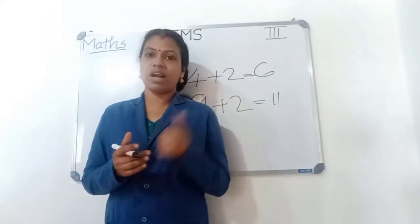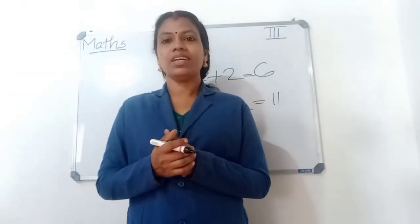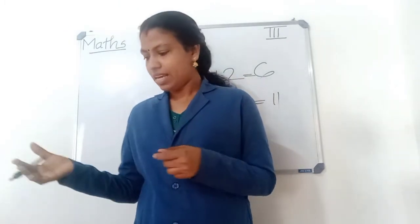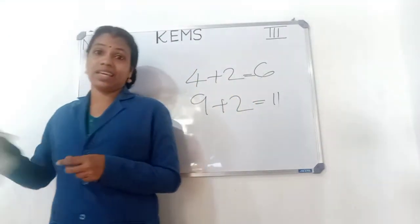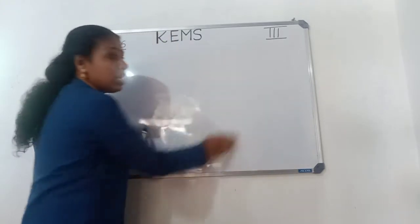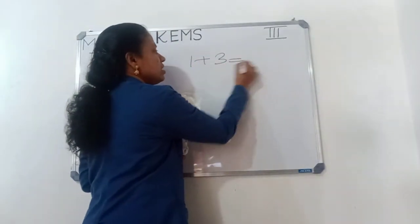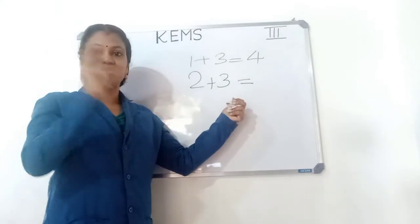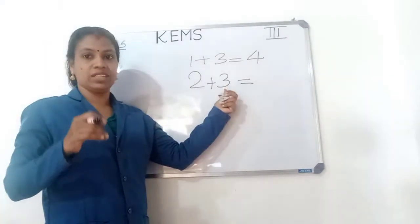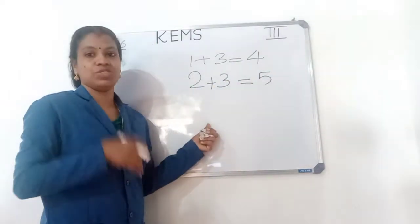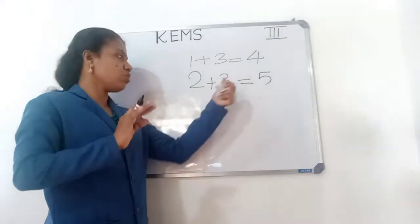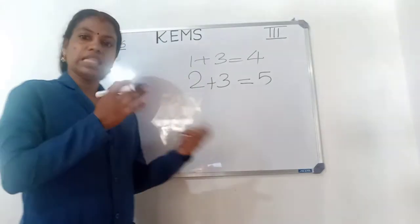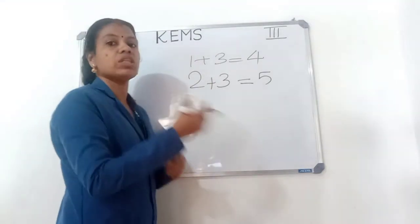Then 3's table — same way. 1 plus 3 is 4. Then 2 plus 3: we know 2 plus 2 equals 4, and one more number here, so 2 plus 3 is 5. Reverse also: 3 plus 2 is 5. 2 plus 3 and 3 plus 2 are the same. You can study like that — in reverse order too.